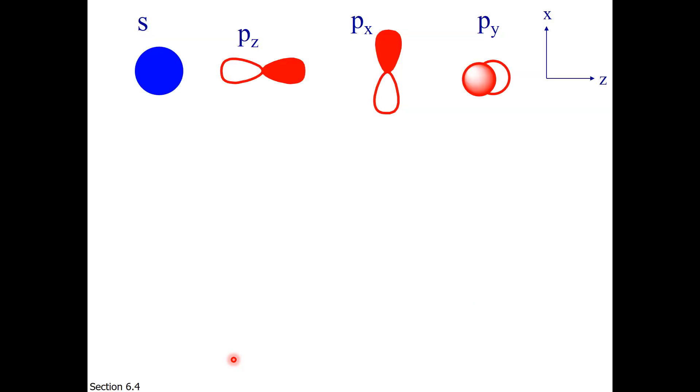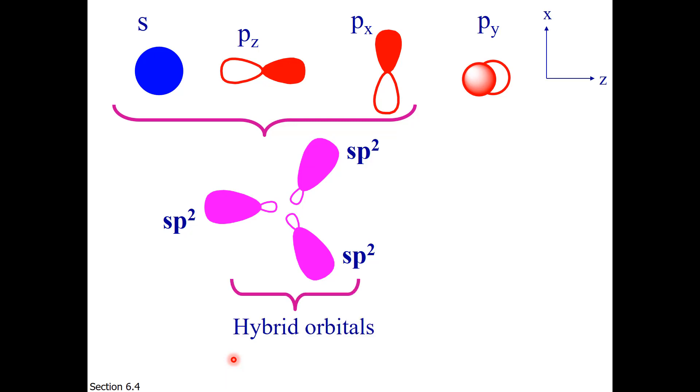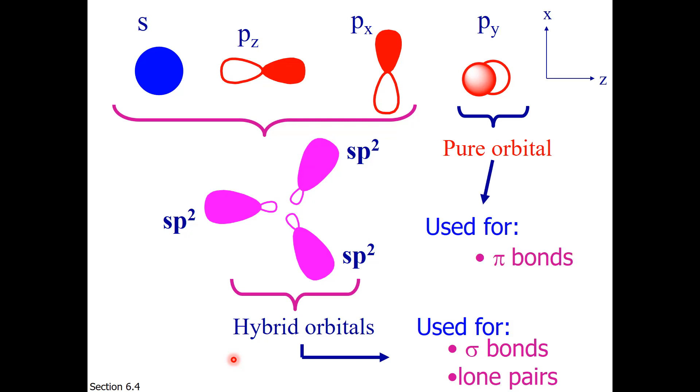So now we're to the connection between hybridization and sigma and pi orbitals. If one has a situation where three electron regions require hybridization of three orbitals to sp2 orbitals, the hybrid orbitals have two functions. They are used for sigma bonds and lone pairs. The pure orbital, also called the unhybridized orbital, is going to be used for pi bonds.